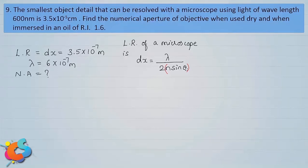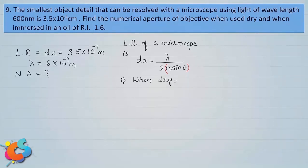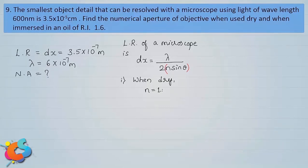There are two cases in this problem. In the first case the microscope is used dry, and in the second case it is immersed in oil of refractive index 1.6. For the first case — used dry — there is only air between the object and the objective, so the refractive index n equals 1.